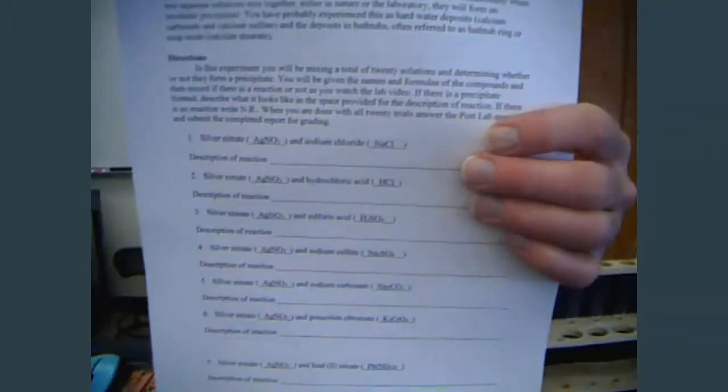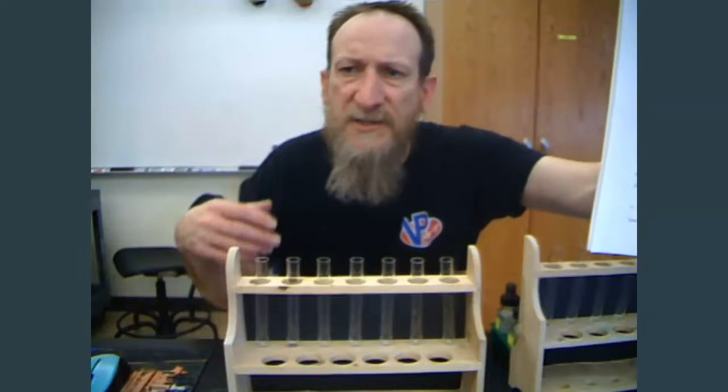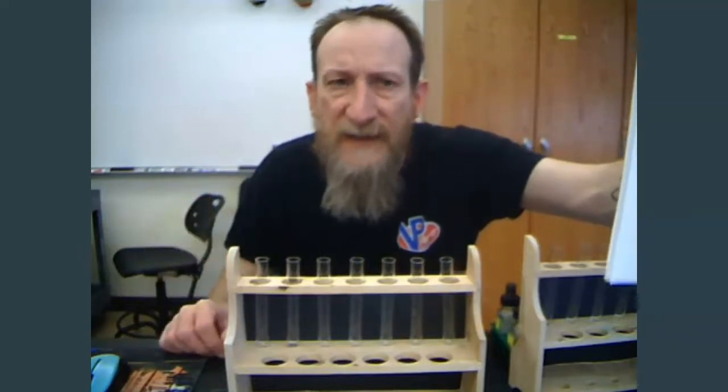You're going to record whether or not there's a reaction and describe the reaction. How do you know it's a chemical reaction? What does the precipitate look like? What's its color? Does it look chunky? Does it look like it turned into a milky type solution? All of those are going to be indicators of a chemical reaction.